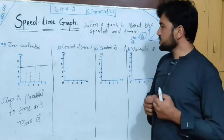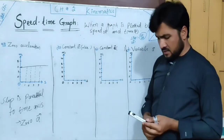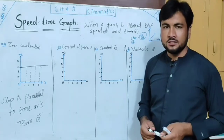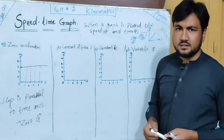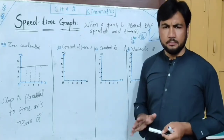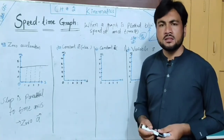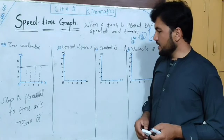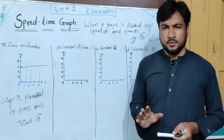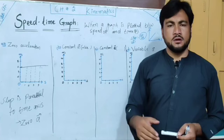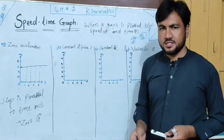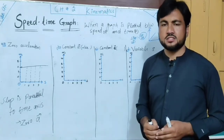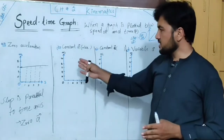Constant acceleration — for positive constant acceleration, if you are moving in a positive direction, the speed will increase. It means speed up in a positive direction. This means velocity or speed increases, which means acceleration is produced. This is called constant acceleration — positive constant acceleration.